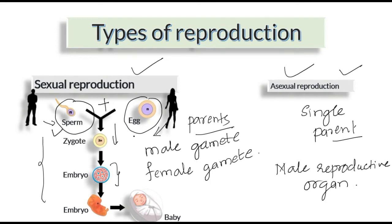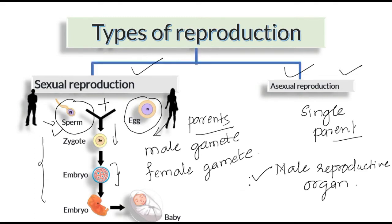In the same way, the egg is developed in the female reproductive organ. Now we need to study about both the male reproductive organ's different parts and functions. In this tutorial, we will take up male reproductive organs and try to understand how sperm production takes place and where.